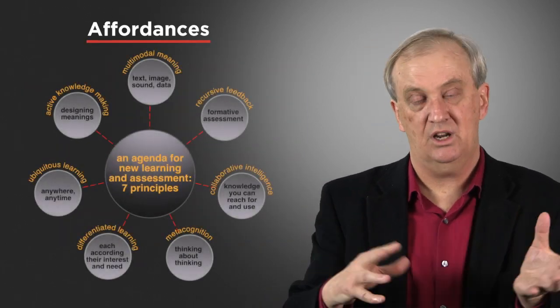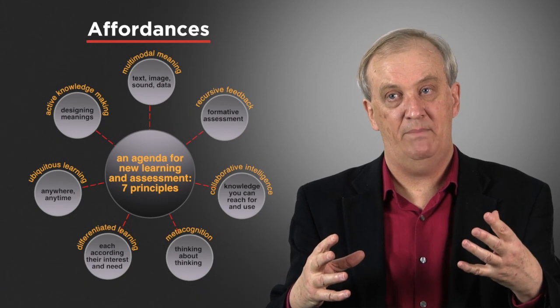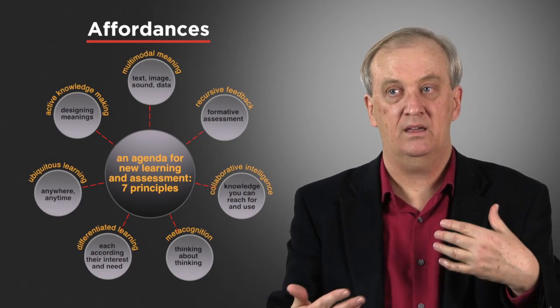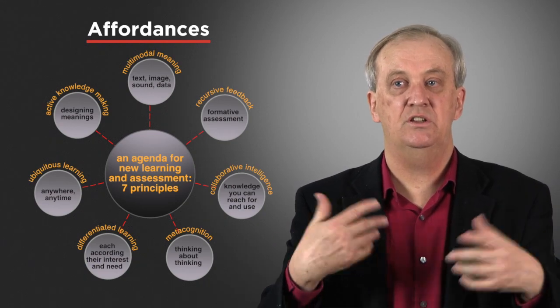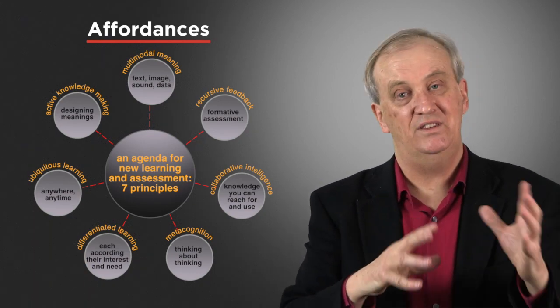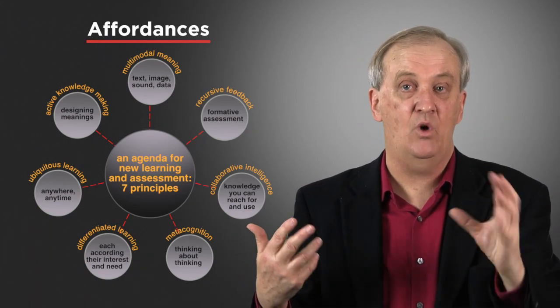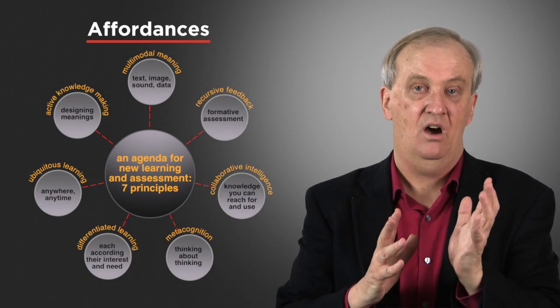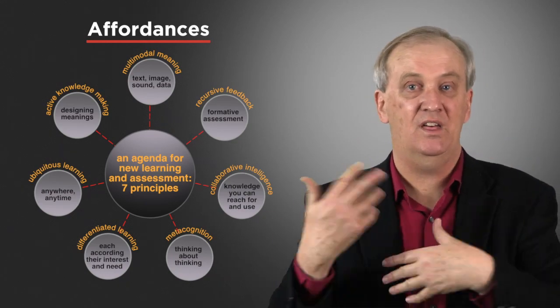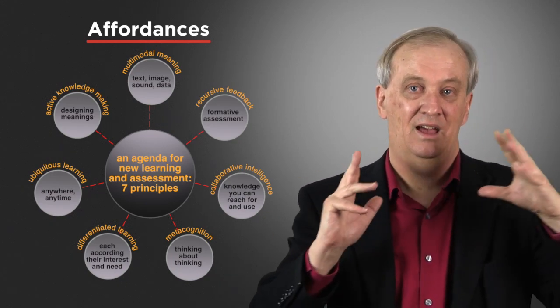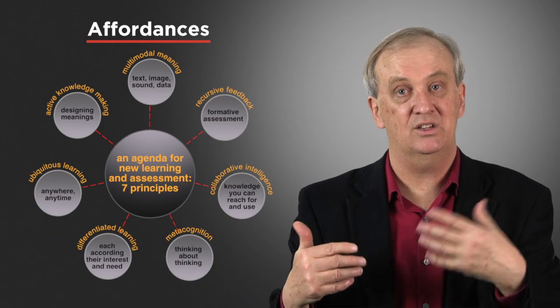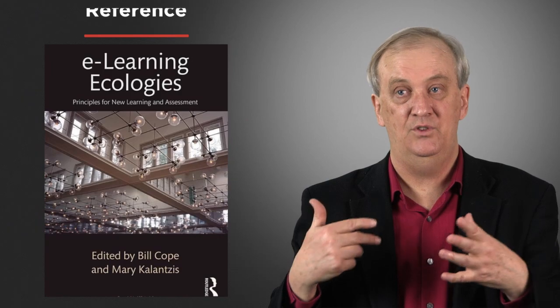These ideas relate to the affordances of new learning environments. We've been discussing seven affordances: multimodal learning, recursive feedback, collaborative intelligence, metacognition, differentiated learning, ubiquitous learning, and active knowledge making. We have another series of videos and a MOOC called eLearning Ecologies where we investigate these in detail. To summarise: with the first generation of digital tools, we reproduced the logic of the old classroom — its knowledge architecture, communications architecture, and pedagogies — in digital environments. But our question is: how can we do something profoundly different? This book here is a summary of these ideas.